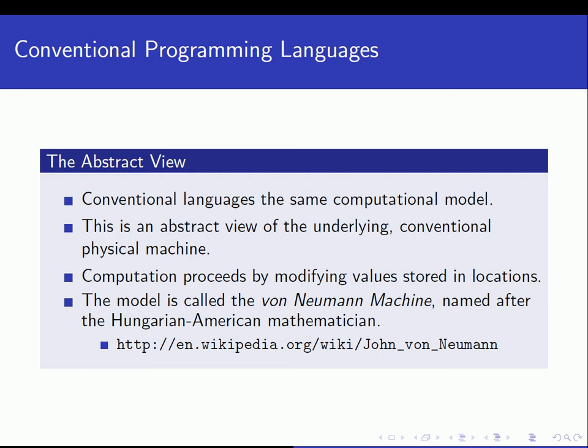This model is called the von Neumann machine, named after the Hungarian-American mathematician John von Neumann. The heart of the model is that you have variables, you have assignment statements so you can change the value of the variables, and you have iteration — so you can iteratively change variables using loops and change the state of the program.